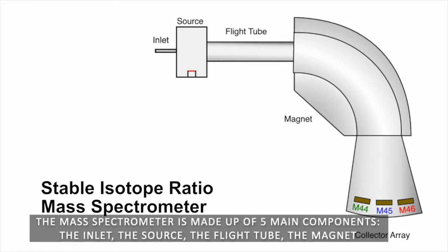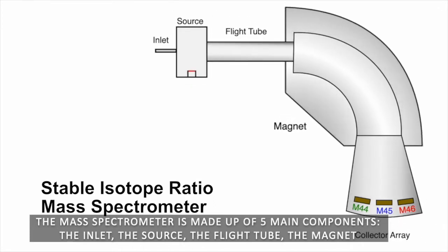The mass spectrometer is made up of five main components: the inlet, the source, the flight tube, the magnet, and the collector cups.